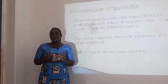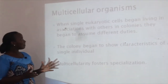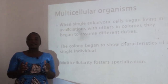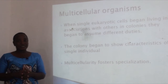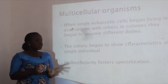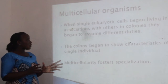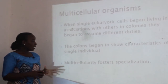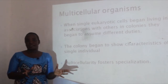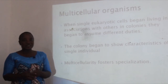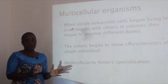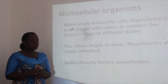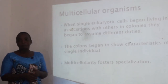Multicellular organisms are organisms with more than one cell. When single eukaryotic cells began living in association with one another in colonies, they began to assume different duties, and the colony began to show characteristics of a single individual. Multicellularity fosters specialization — in multicellular organisms, certain cells perform certain tasks and other cells perform different tasks.